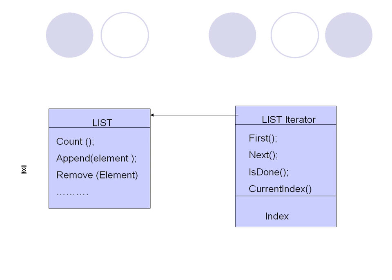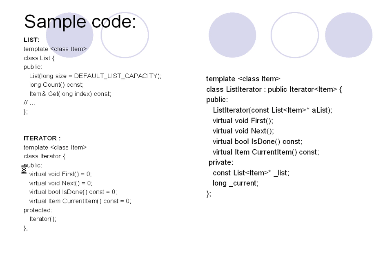A sample code for this iterator and list is shown here. The list template class implements the list aggregate with a default list capacity and functions like count and get. The get function is implemented in the list class to provide access for the iterator. We have a generic iterator class that defines four functions: first, next, is done, and current item. We inherit from the generic iterator class in the list iterator. If we want a reverse iterator tomorrow, it will again inherit from the same iterator class and implement those functions.